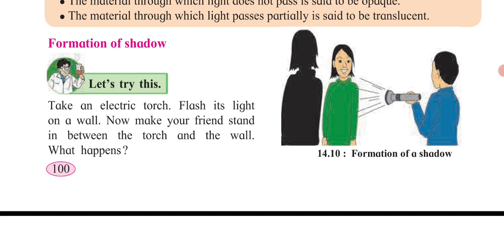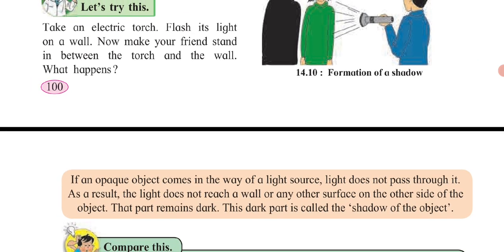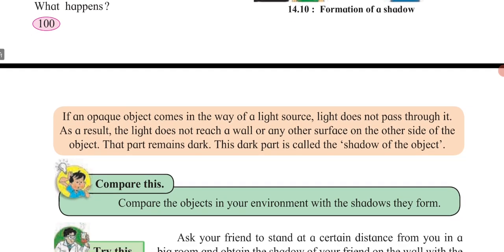Now, how is a shadow formed? When an opaque object comes in front of a source of light, the shadow falls at the back of it. If an opaque object comes in the path of light, the light does not pass through it. As a result, light does not reach the wall behind the object, and that dark part is called the shadow of the object.